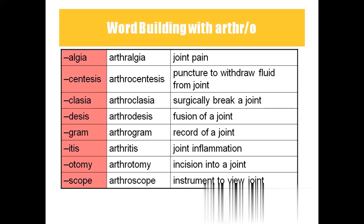Arthrocentesis means puncturing to withdraw the fluid from the joint. Centesis always means draining the fluid from the joint, or anywhere — from the pleural cavity, from the pericardial cavity. If anywhere we are draining the fluid for examination purpose, then we call it as centesis. Based on the region, the prefix will differ, like pleurocentesis, pericardiocentesis, arthrocentesis.